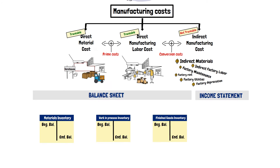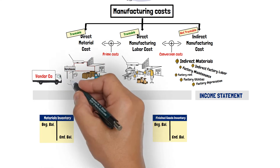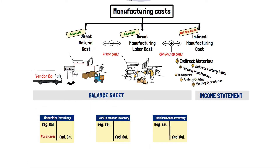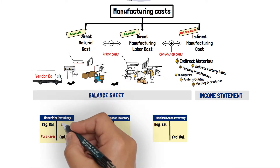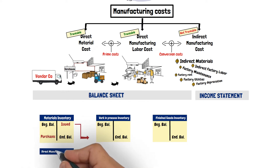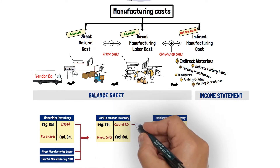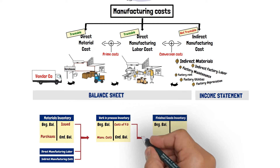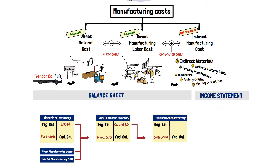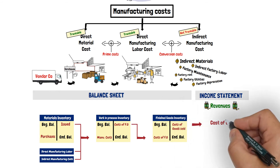A manufacturing company purchases direct material that is reported as direct material inventory on the balance sheet. Then direct materials are transferred to work in progress when they are issued to production, along with the cost of direct labor assigned to production and the indirect manufacturing costs. When the production is completed, the goods produced are transferred to the finished goods inventory. Finally, when the goods are sold, revenues are reported and finished goods inventory becomes cost of goods sold.